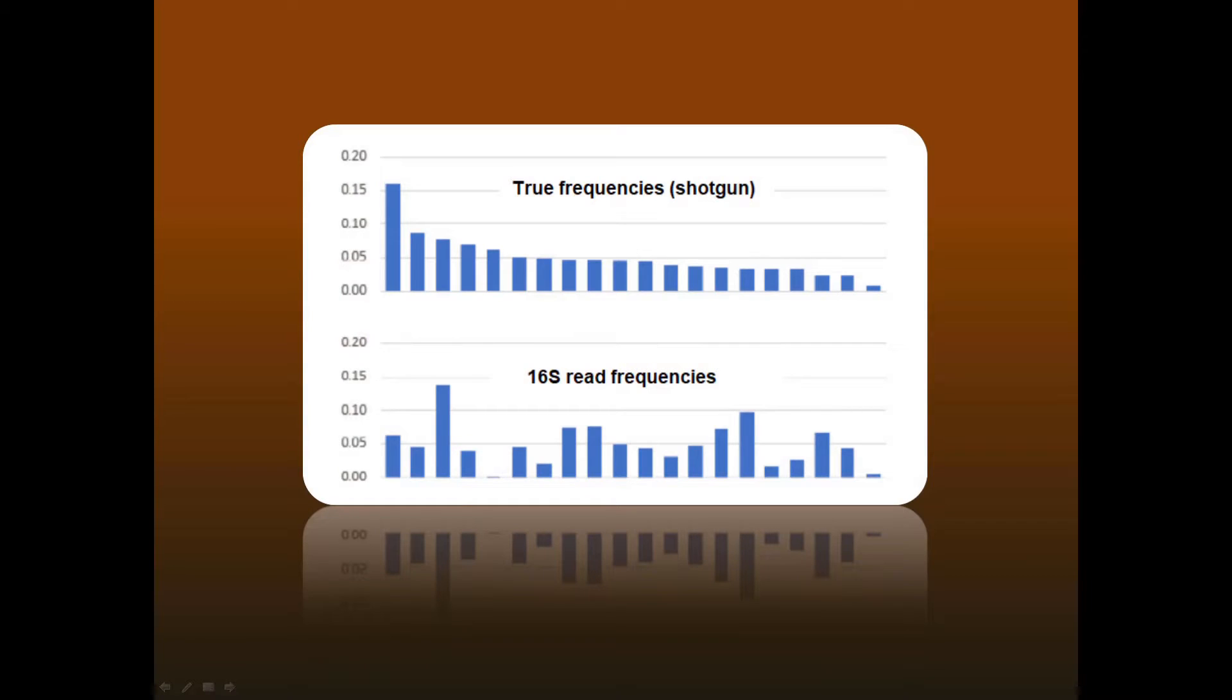Here is an example from real data. The top histogram shows the true frequency distribution of species measured using shotgun sequencing. The bottom histogram is the frequency distribution measured by 16S reads. The distributions look very different, and the correlation between the true and measured frequencies is very weak.